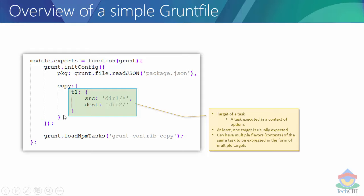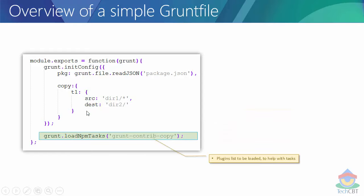You can have multiple tasks, each with multiple targets, all accomplishable as part of a single Grunt execution. Finally, all plugins and tasks need to be associated with their respective plugins, loaded using the grunt.loadNpmTasks statement. In this case: load the Node package manager task called grunt-contrib-copy. Once that gets loaded it knows what 'copy' is. Usually the task name is a suffix of the grunt-contrib package name, but always check the documentation for how a particular plugin is supposed to be used.